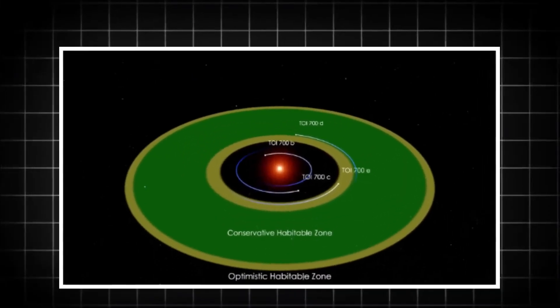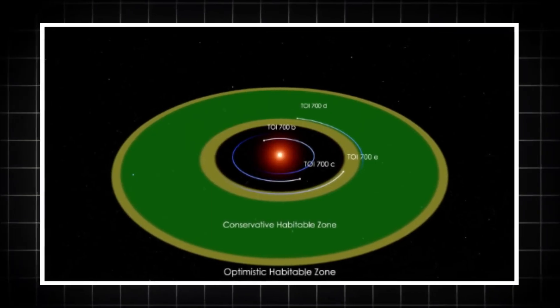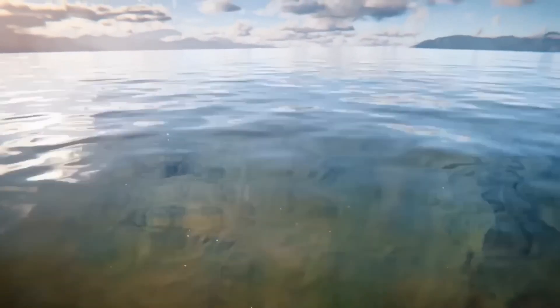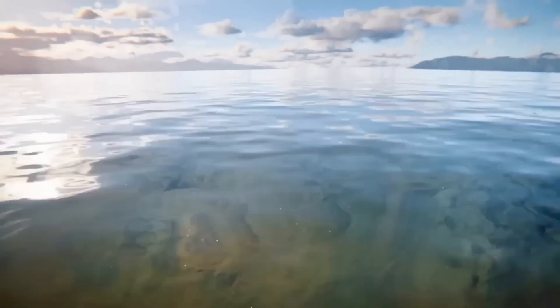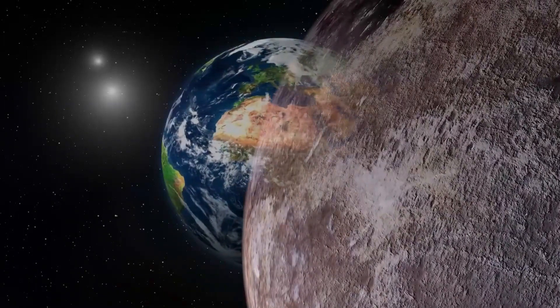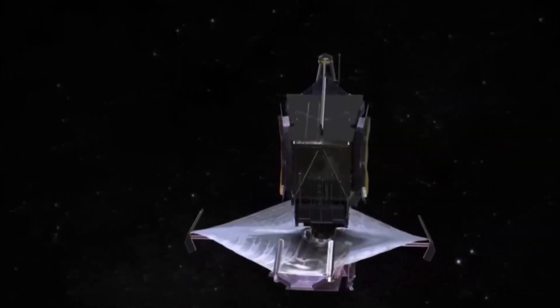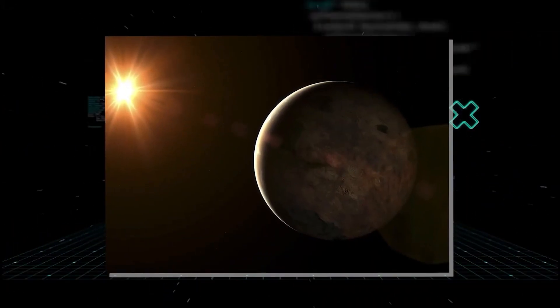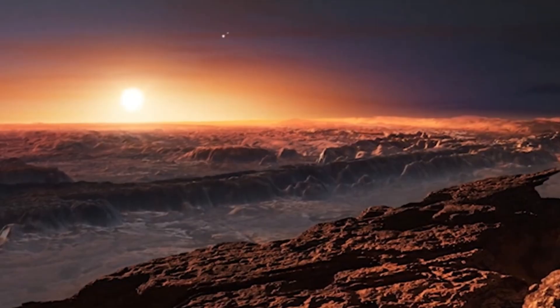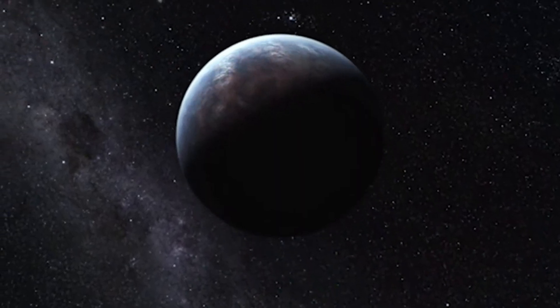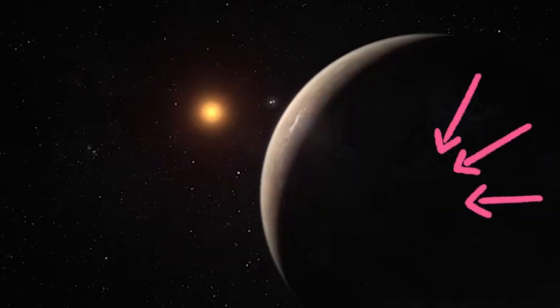The idea of the James Webb Telescope wasn't new. In fact, it had been brewing for decades. The concept began to take shape in the 1990s when astronomers started to realize that the next big leap in space observation had to be in the infrared spectrum. But building a telescope that could operate in space, millions of miles away from Earth, required more than just an idea. It required groundbreaking technology, precision engineering, and international collaboration.